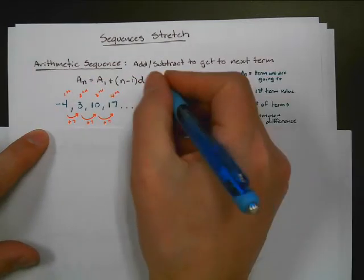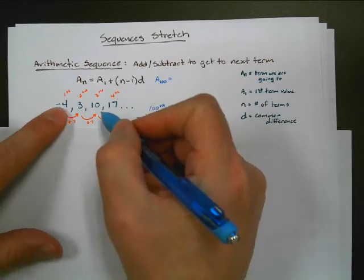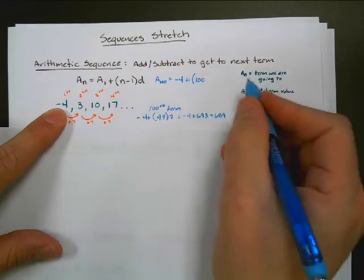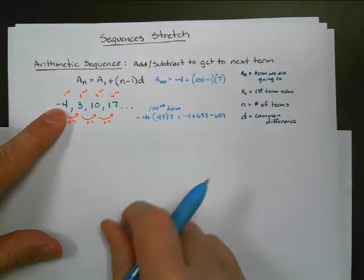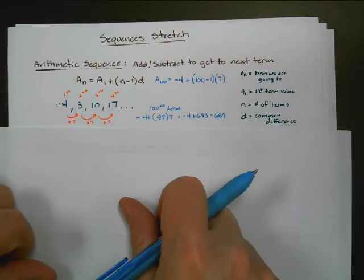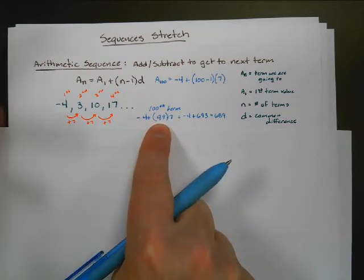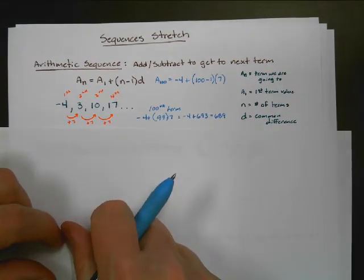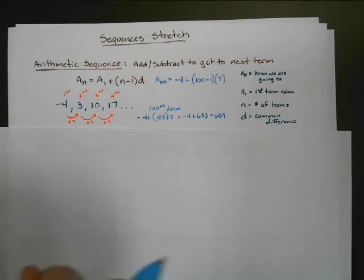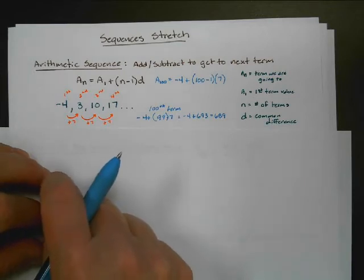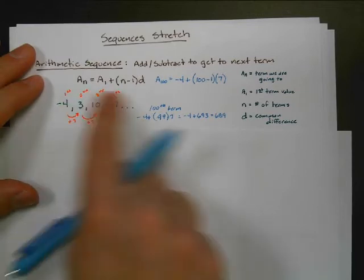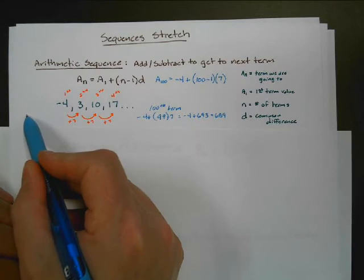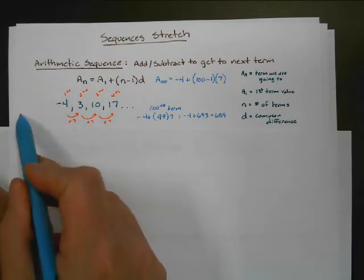So that would be 693 minus 4, meaning our hundredth term is 689. You can do it without the formula as long as you know what the formula is counting — it's just finding how many times we are adding our common difference. To get to the hundredth term, we added our common difference 99 times. Using the formula: A(100) equals negative 4, plus 100 minus 1, times 7. You can also go backwards along this sequence — instead of adding 7, you would subtract 7 to go that direction.